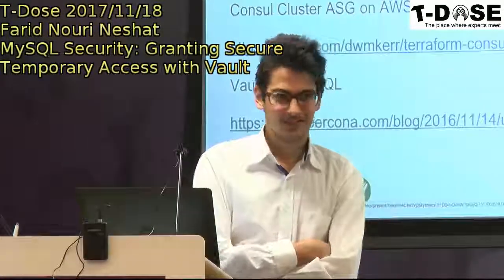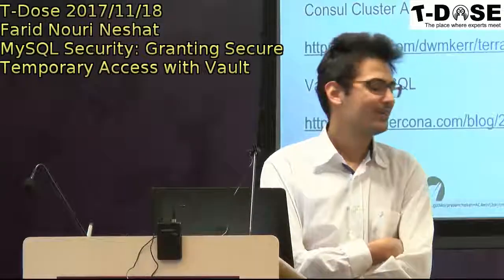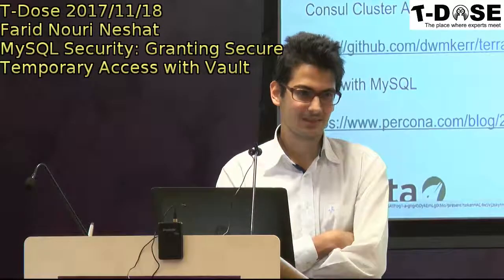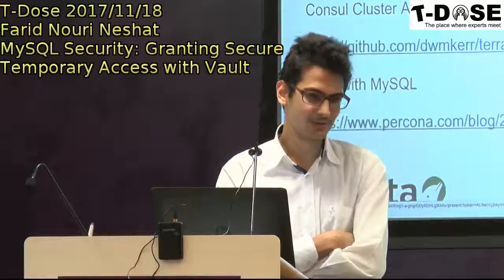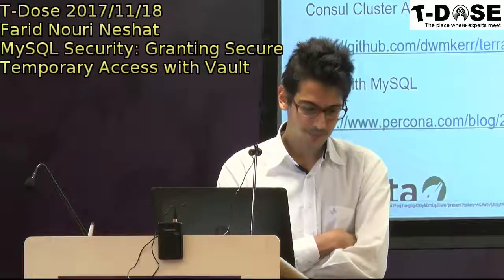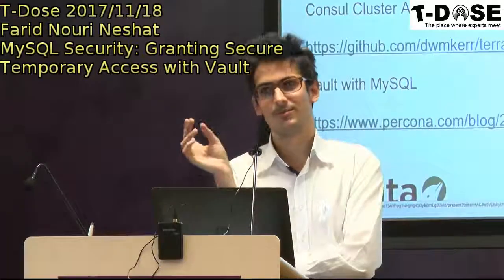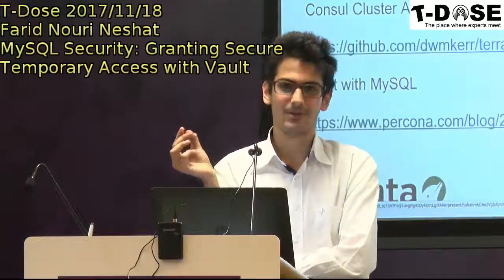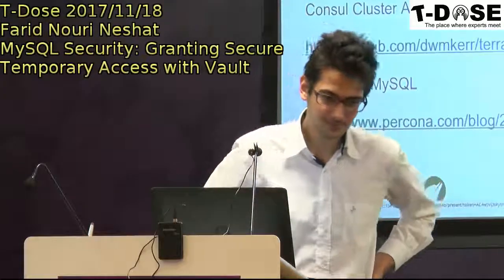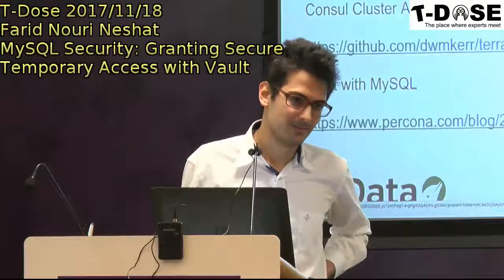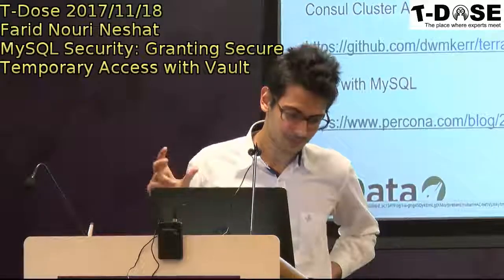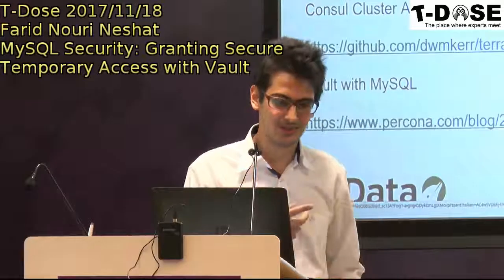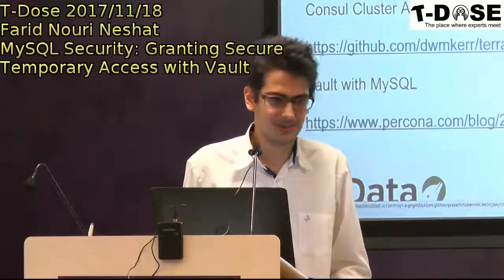Right now we aren't using it in our current company, but at a client we had, they were using it to keep all their secrets there — for example, API tokens. Developers could authenticate with LDAP and upload the tokens there. The machines in AWS had an instance profile with a certain role that Vault knew about, and they configured Vault so that whenever a machine tried to authenticate from a certain instance, it would give access to those secrets.